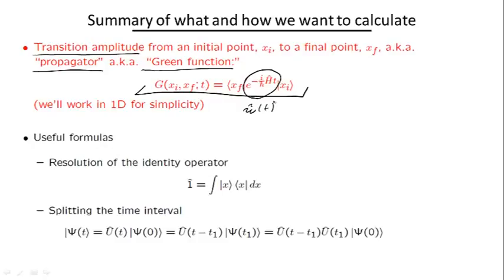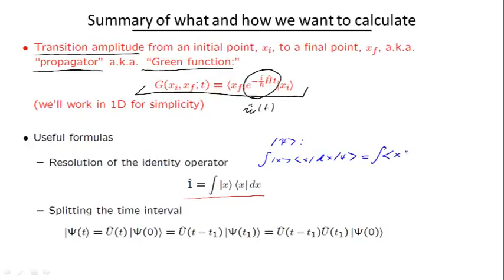The first formula we have already discussed in the second lecture last week. This is the so-called resolution of the identity operator. The fact that it is the identity operator means that if we have an arbitrary wave function ψ and we act by this operator on ψ, we get the integral of ⟨x|ψ⟩ times |x⟩ dx, and this is identically equal to ψ itself. This is formula number one.